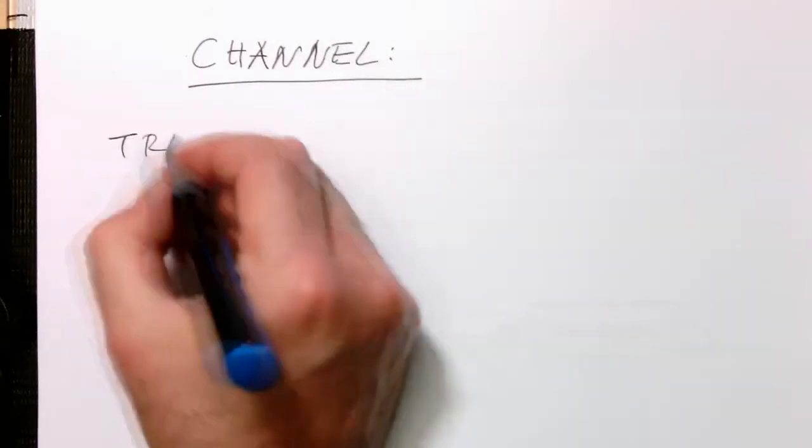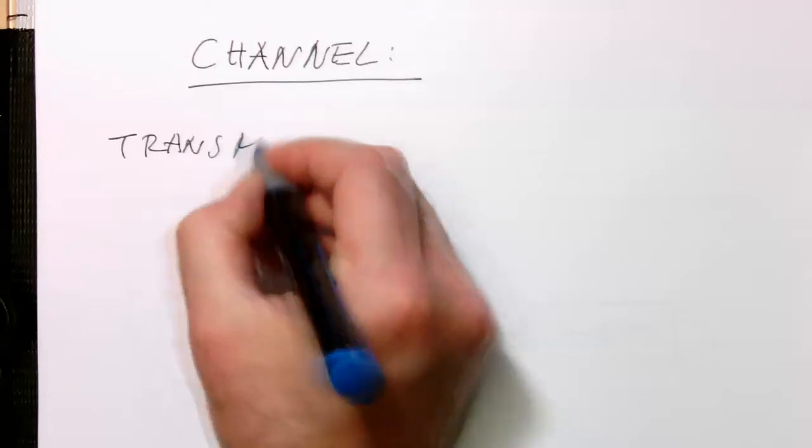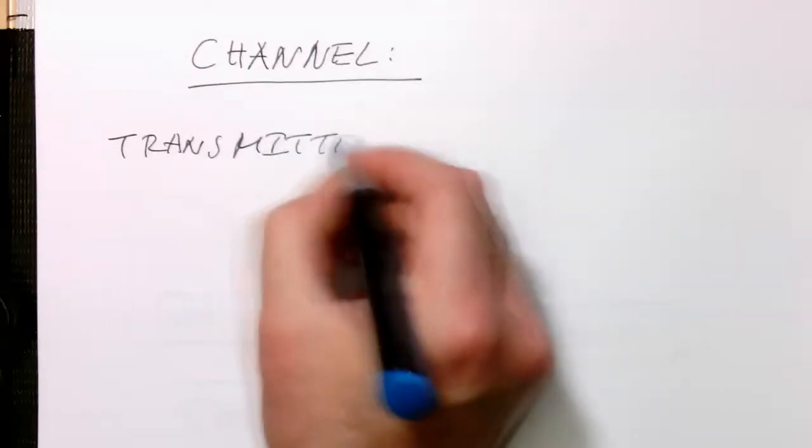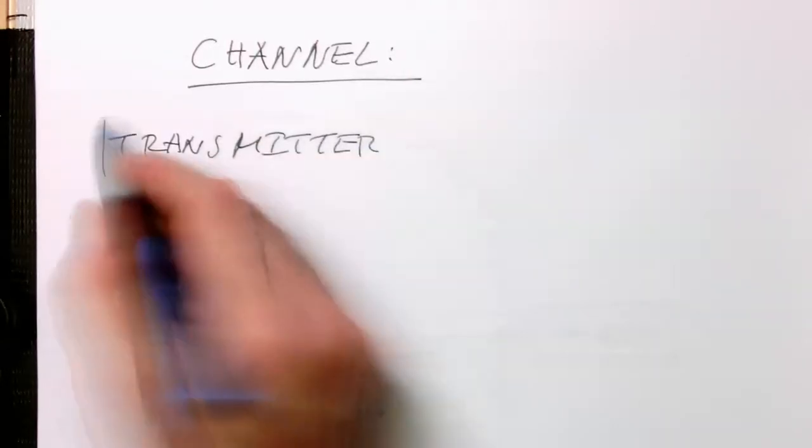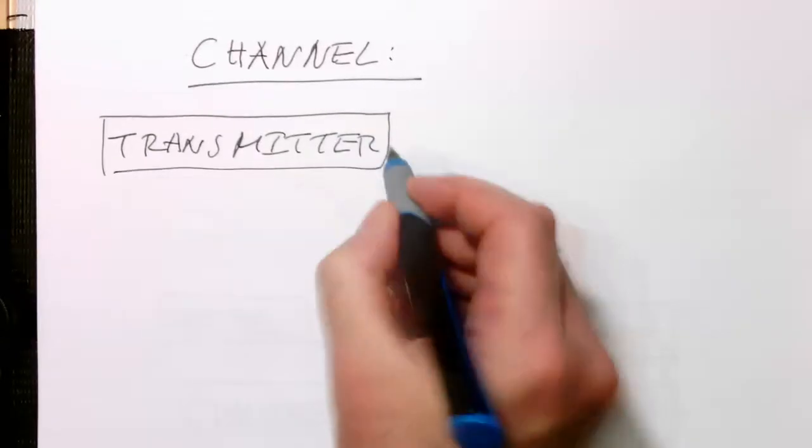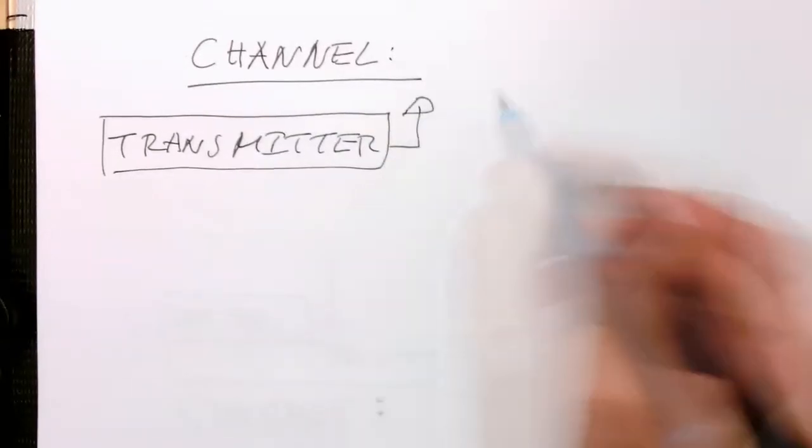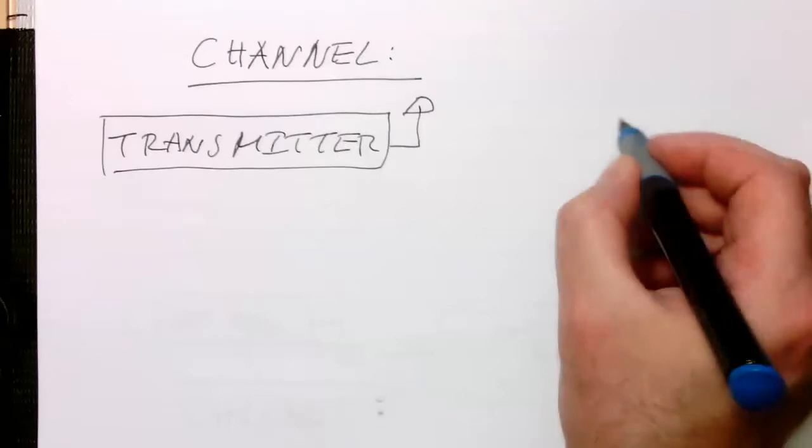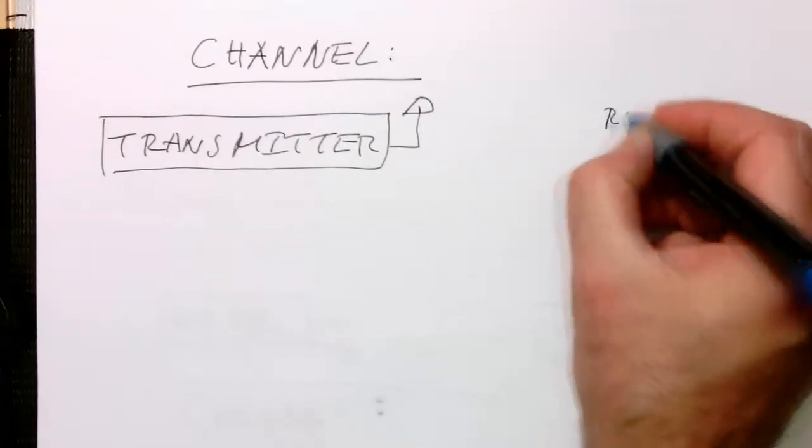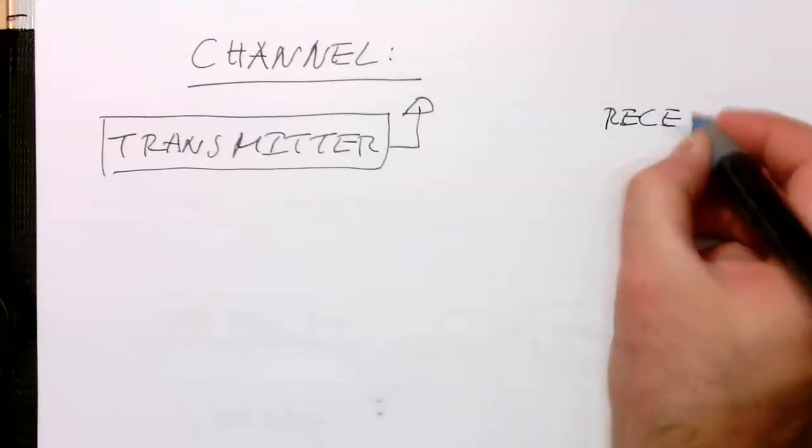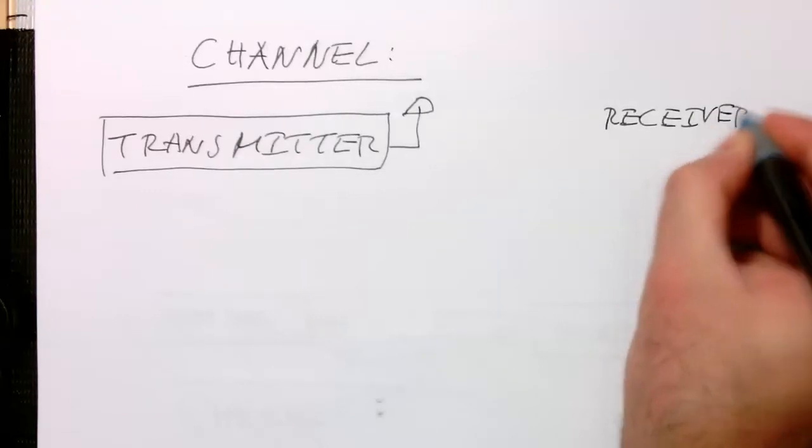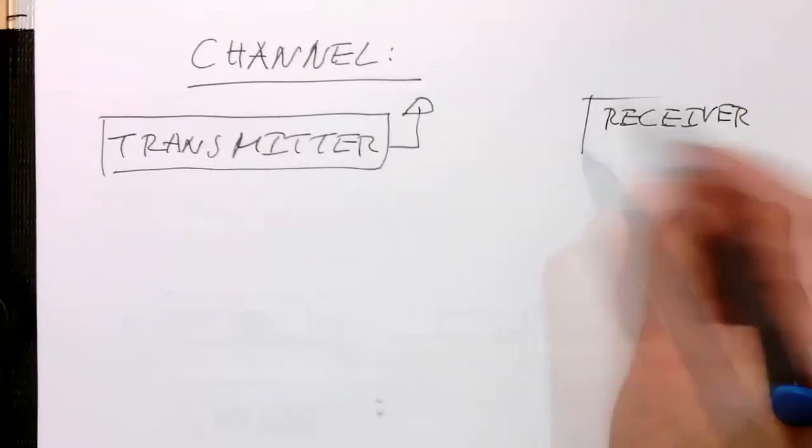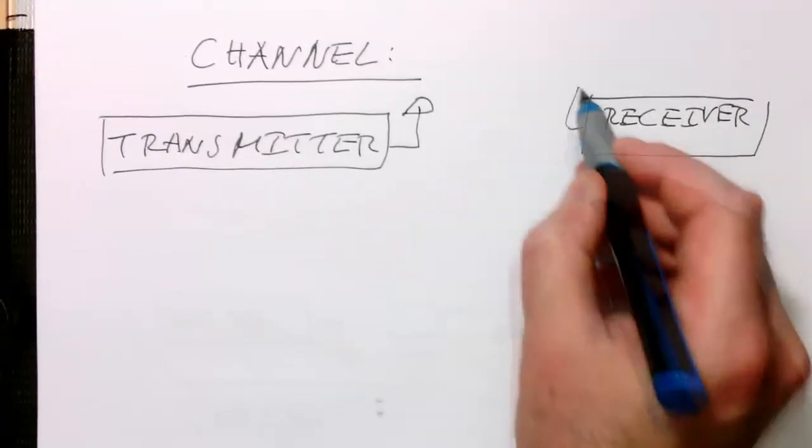So if we have here the transmitter, this has an aerial here, and then on the other side we have the receiver. The receiver is here and this also has an aerial.